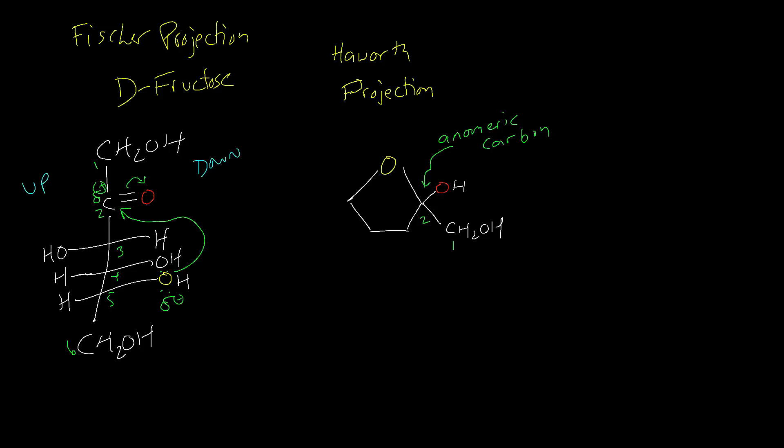The OH group that's attached to the three carbon is going to be up, and the four is going to be down. And the OH that was attached to the five carbon is really neither up nor down, since it's part of the ring structure now. This is the Haworth projection, D-fructose from the Fischer.